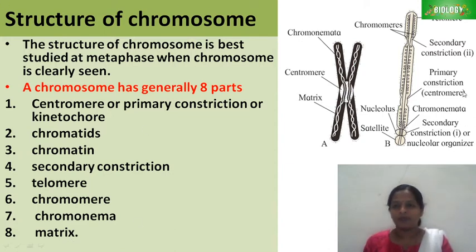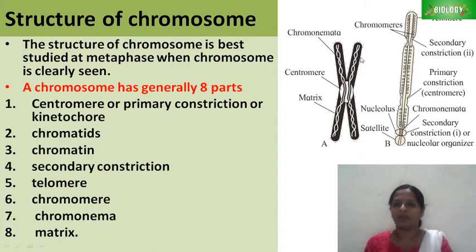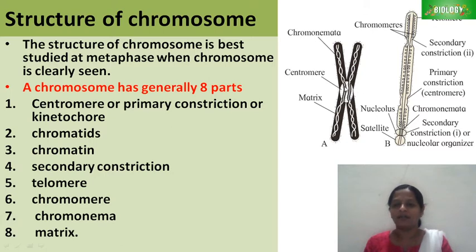This is the basic structure of chromosome. This is the duplicated chromosome. Here we can see a single strand, but in the duplicated form, duplicate strands are seen. These duplicate strands are called sister chromatids.